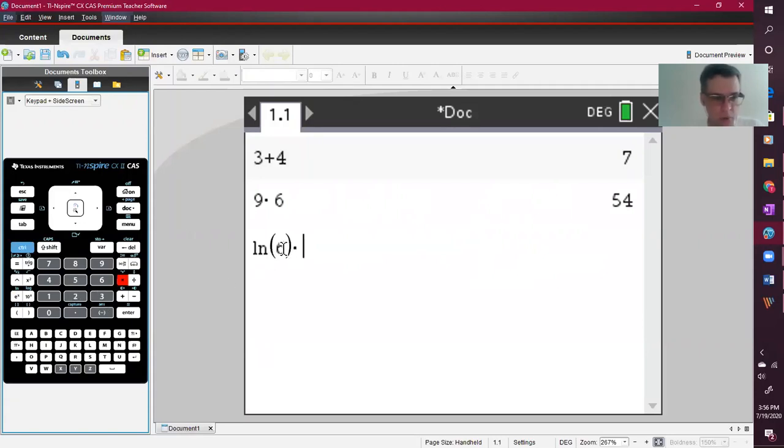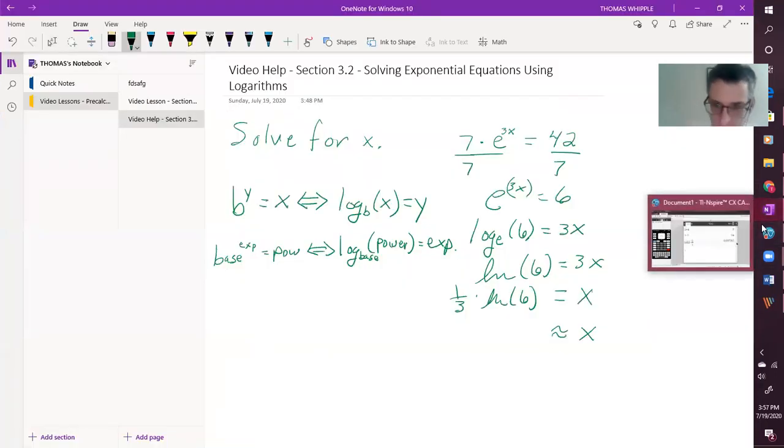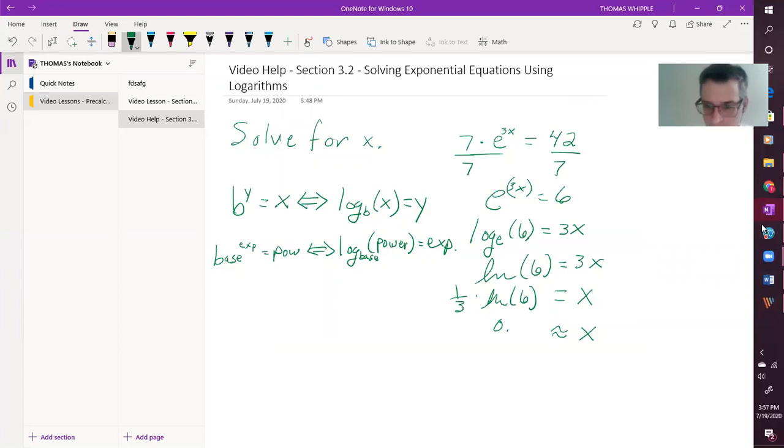And then that's being multiplied by 1 third. And notice I need to come outside the parentheses here to do the multiplication. I'm going to type it kind of exactly the way it's written on the page. And then to get an approximation, I'm going to hit control, enter, and it looks like it's 0.597. So this equals approximately 0.597.